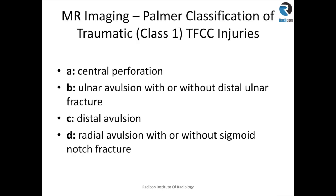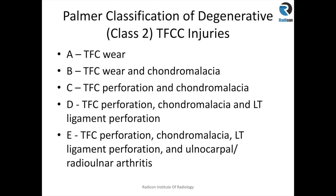The Palmer classification is a well-recognized classification for TFCC injuries. Type 1 or Class 1 is traumatic: Class 1A is central perforation, 1B is ulnar avulsion with or without distal ulnar fracture, 1C is distal avulsion, and 1D is radial avulsion with or without sigmoid notch fracture. Type 2 is degenerative — it starts with mild wear and tear and progresses towards chondromalacia with perforation, and with further injuries to the lunotriquetral ligament and ongoing ulnar carpal and radiocarpal arthritis.